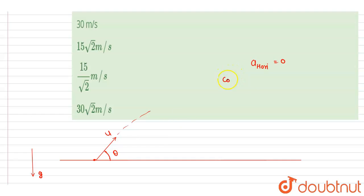So I will write down: component of velocity along horizontal will be same.